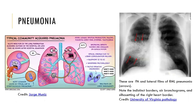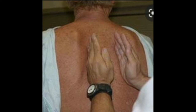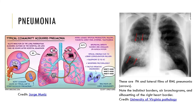Pneumonia can be bacterial or viral — it's an infection of the lungs. One way to assess for pneumonia is through tactile fremitus. You place both hands on someone's back and have them say '99, 99, 99.' An increased amount of tactile fremitus can be a positive sign for pneumonia, indicating increased air density in the lung tissue. Equal and moderate vibrations are normal; increased or decreased vibrations represent a positive test for pneumonia.